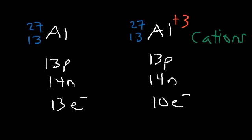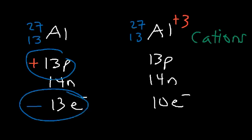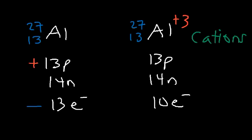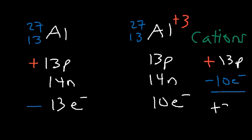The aluminum 3+ cation contains 10 electrons. Positively charged ions are known as cations; negatively charged ions are known as anions. For the neutral atom, 13 protons plus 13 electrons gives a net charge of zero. For the ion, 13 protons plus negative 10 electrons gives a net charge of positive 3, which matches the ion's charge.